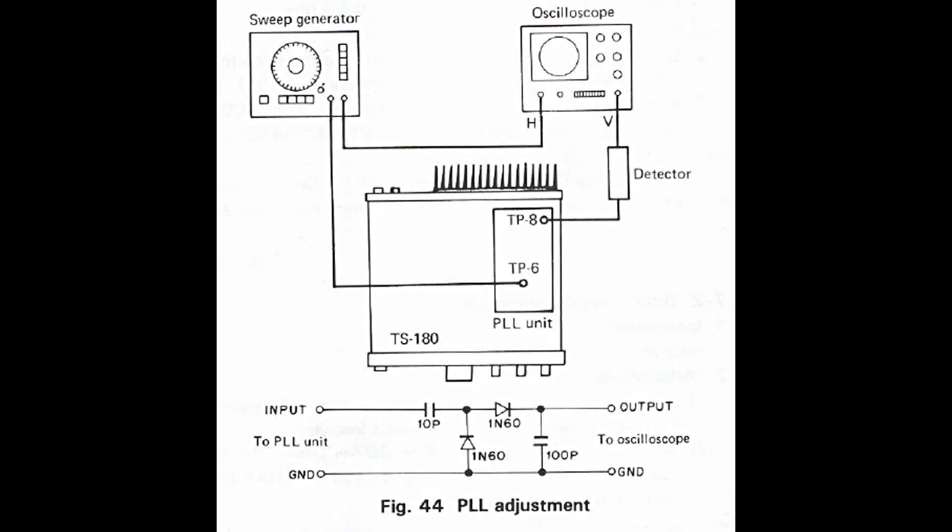However, the procedure asks for a sweep generator, which isn't an instrument I keep on my lab anymore. The manual also gives a schematic of a simple RF detector to be used with the oscilloscope. I clearly need to come up with a different method to obtain the same results.